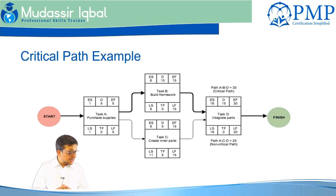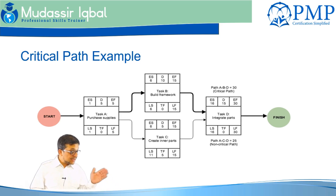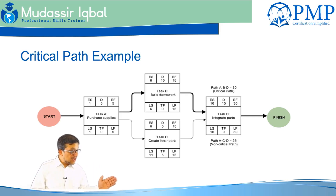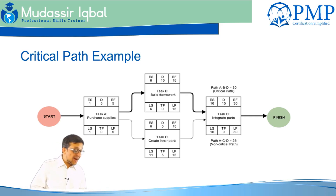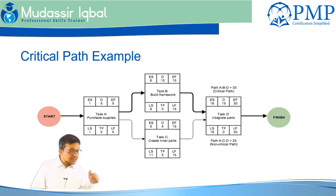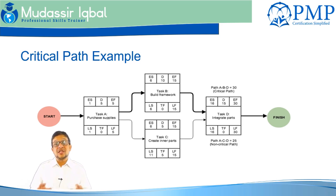In this example, you can see early start and early finish. Task A is 5 days, Task B is 10 days, Task C is 5 days, and Task D is 15 days. The critical path runs through A, B, and D, each having a total float of zero. Task C has a float of 5 days, meaning you can start it on day 6 or day 11, completely based on your preferred logic for the project.